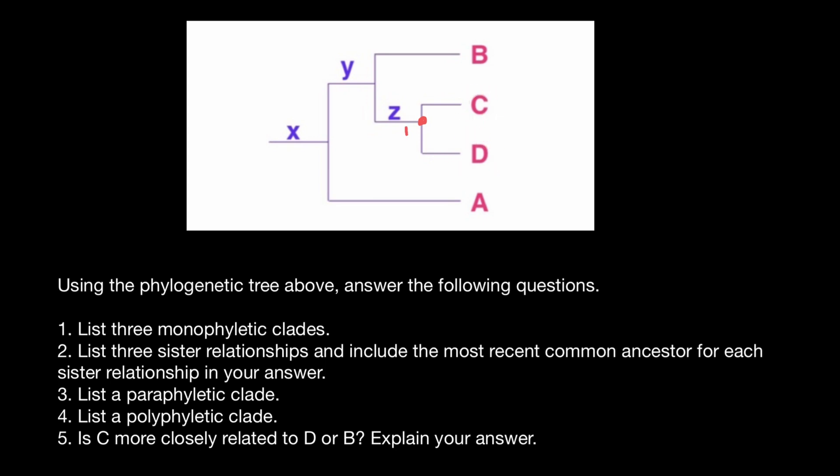And we circle this common ancestor and all its descendants. So this is going to be one monophyletic group or clade.